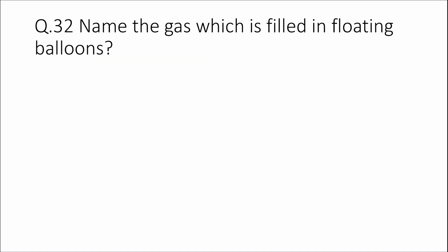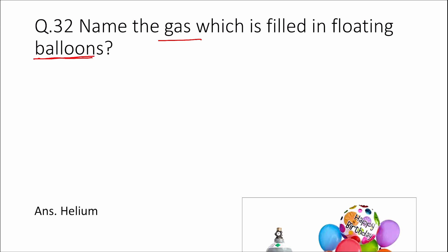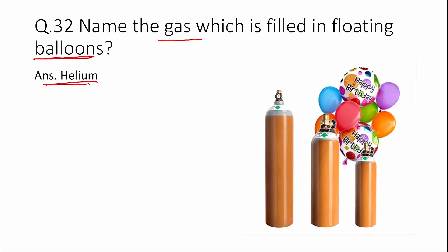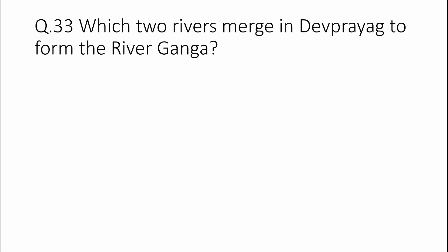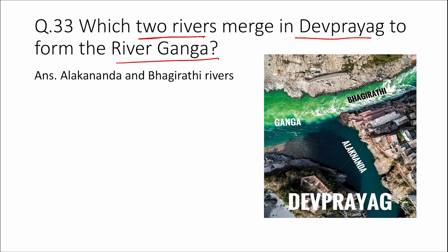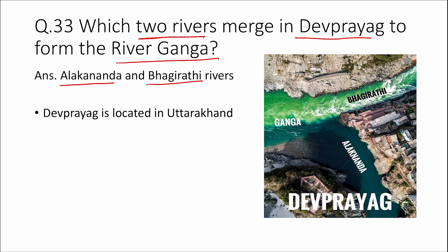Question 32: Name the gas which is filled in floating balloons. Answer: Helium. Question 33: Which two rivers merge at Devprayag to form the river Ganga? Answer: Alaknanda and Bhagirathi rivers. Devprayag is located in Uttarakhand.